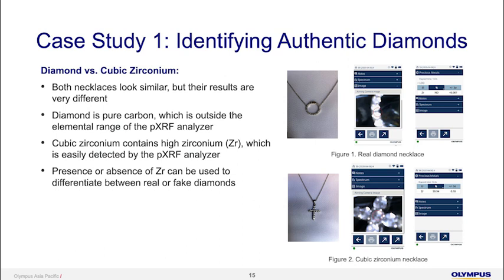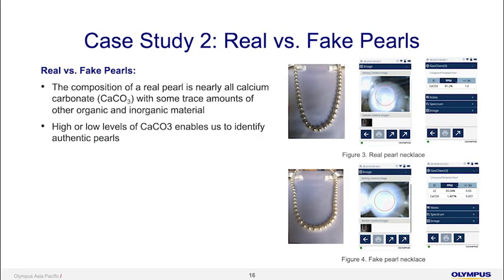The second case study is real versus fake pearls. Real pearl composition is nearly all calcium carbonate, with some traces of organic or inorganic material. Both necklaces look similar visually. But looking at the concentrations, the real pearl shows around 81% calcium carbonate, whereas the fake pearl shows only around 1.4% calcium carbonate. From this, we are able to determine whether a pearl is real or fake.